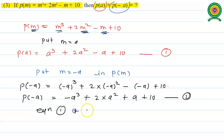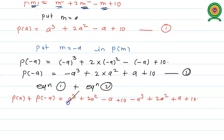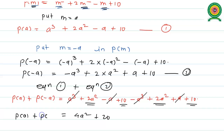Now add equations 1 and 2 to get P(a) plus P(-a). On the right-hand side: a³ minus a³ cancels, -a plus a cancels, and 2a² plus 2a² gives 4a², and 10 plus 10 gives 20. Therefore P(a) plus P(-a) equals 4a² plus 20.